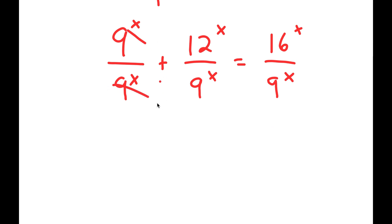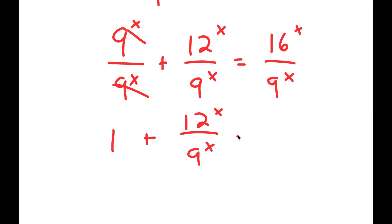Now, 9 to the power of x over 9 to the power of x — those two cancel out and I get 1. So I have 1 plus 12 to the power of x over 9 to the power of x is equal to 16 to the power of x over 9 to the power of x.